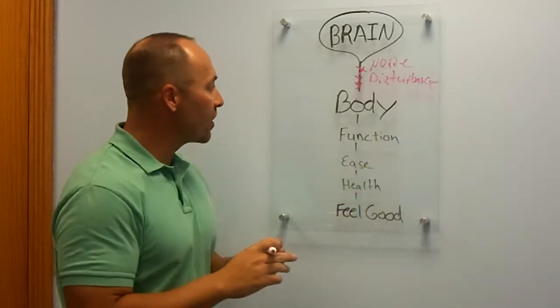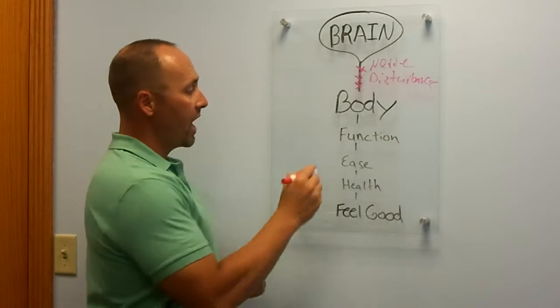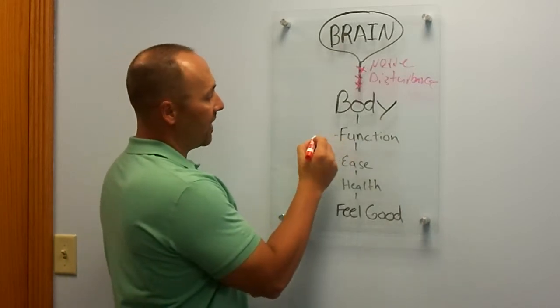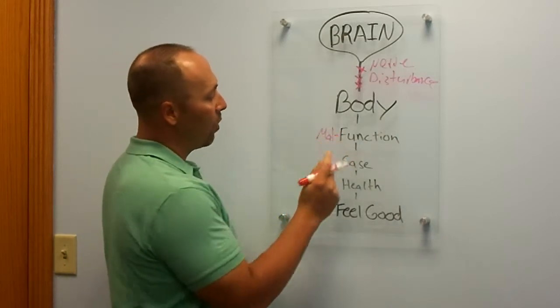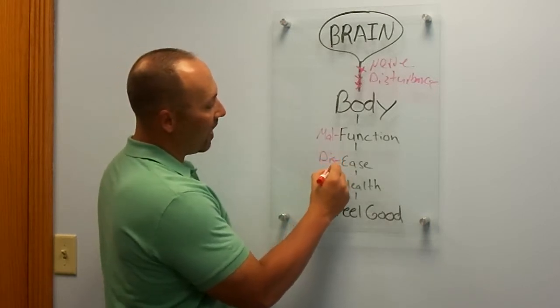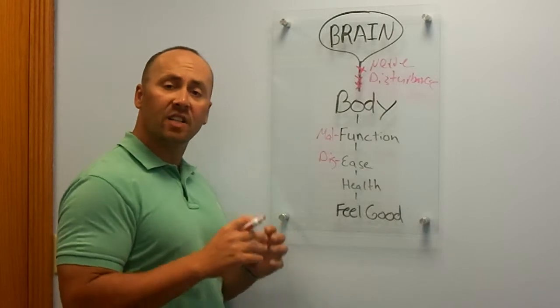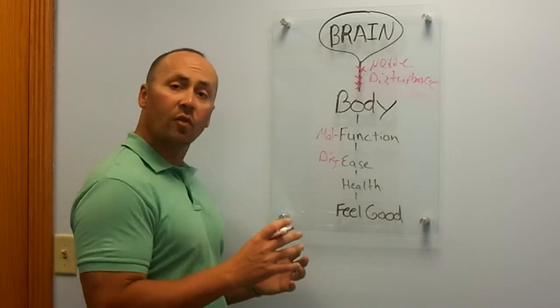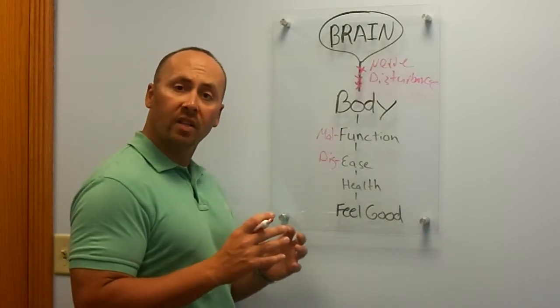When you get nerve disturbance, that signal that goes to your body is now altered, and it has the opposite of function now. That nerve will start to malfunction where it goes. The body will work now with dis-ease rather than ease. And the dis-ease means that your body has to expel lots of extra energy to get that nerve signal out to where it needs to go.